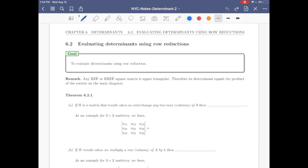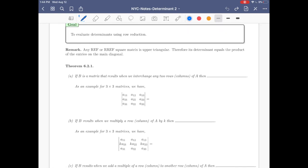Remark: any REF or RREF square matrix is indeed upper triangular. The way we construct REF and RREF shows that these type of matrices are upper triangular. Therefore its determinant equals the product of the entries on the main diagonal.